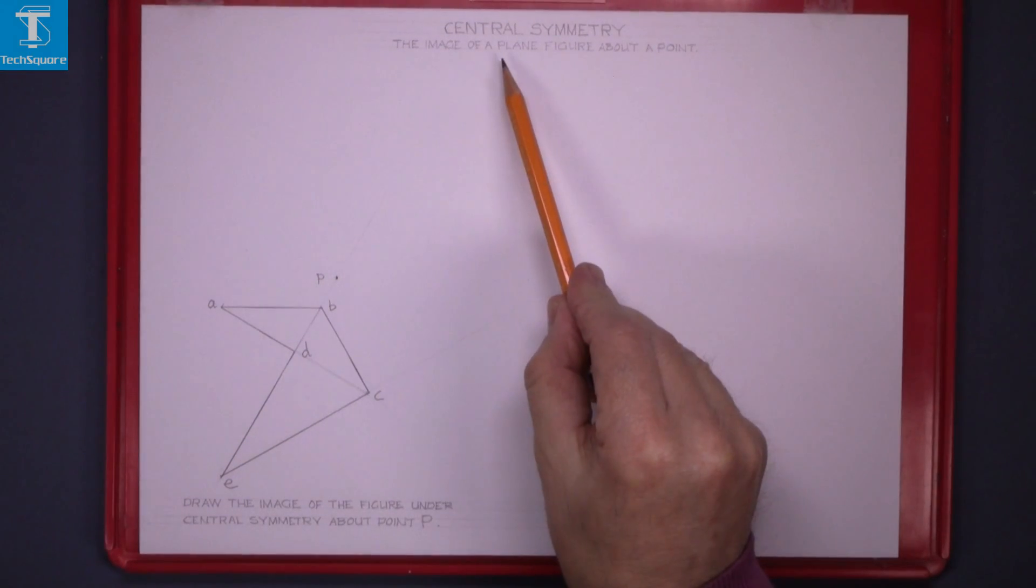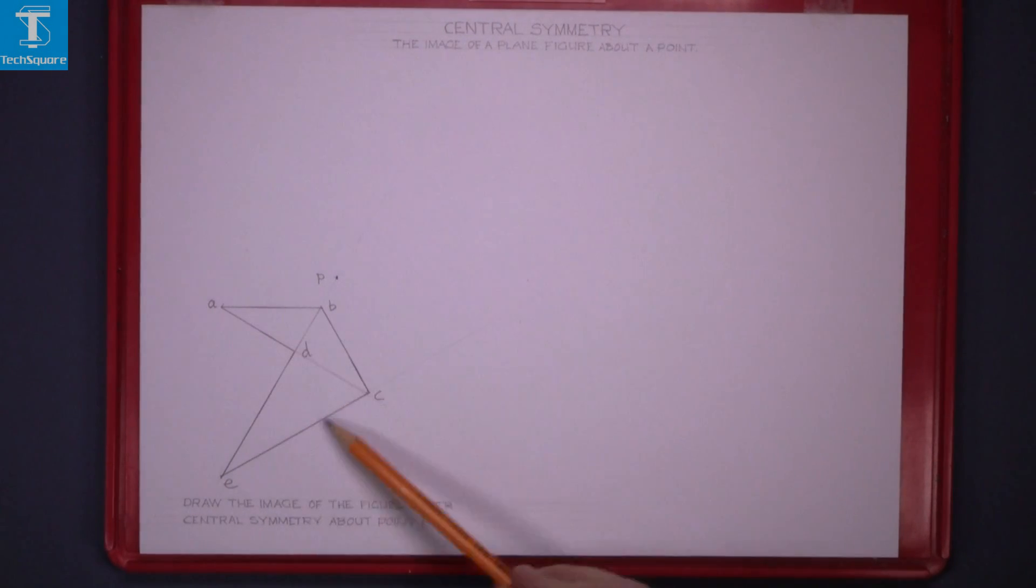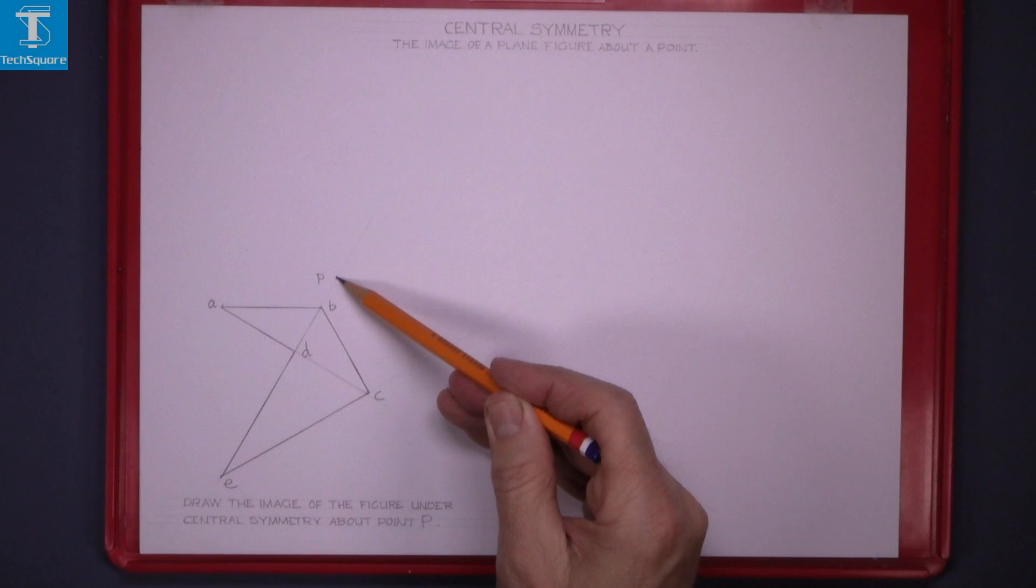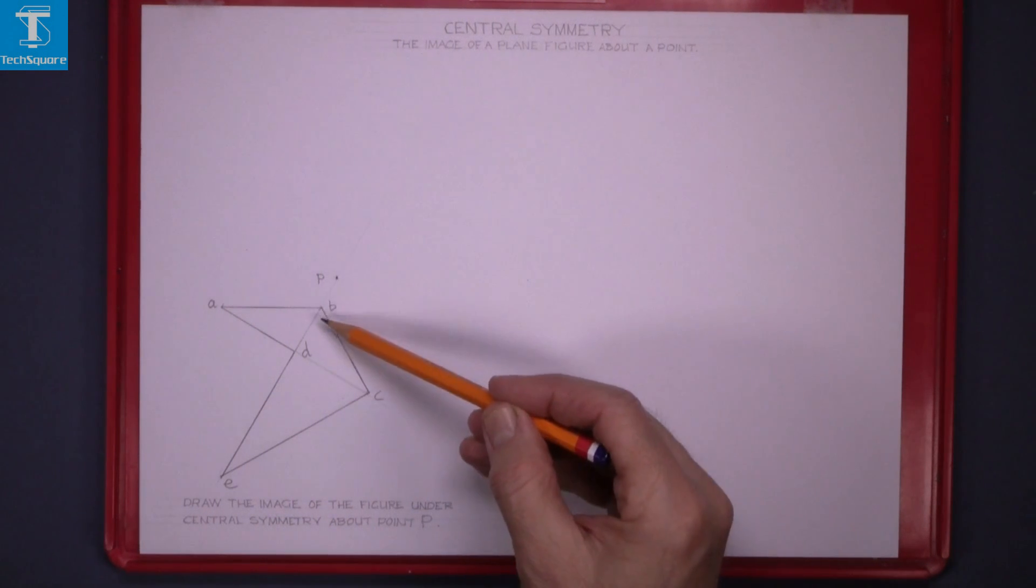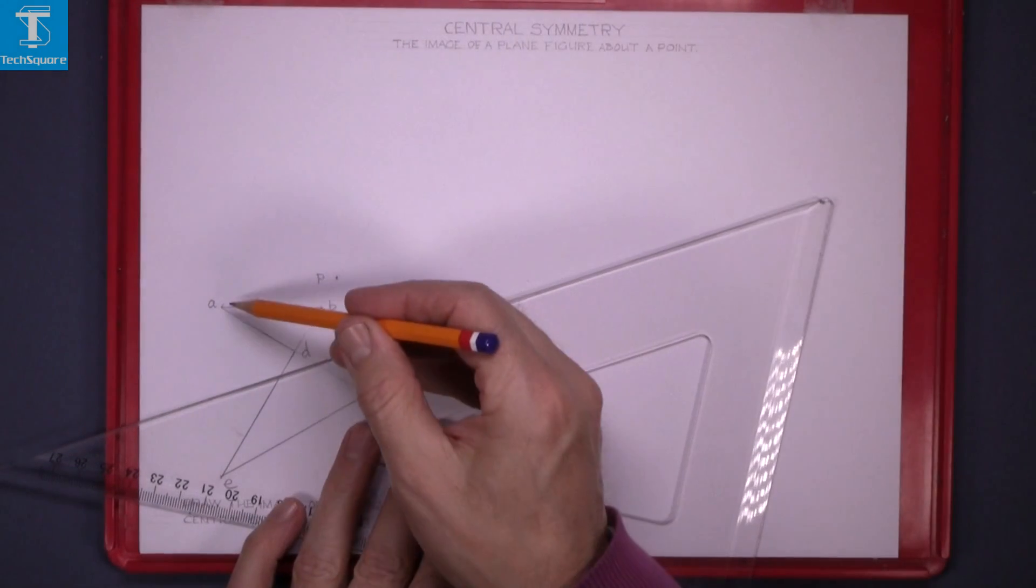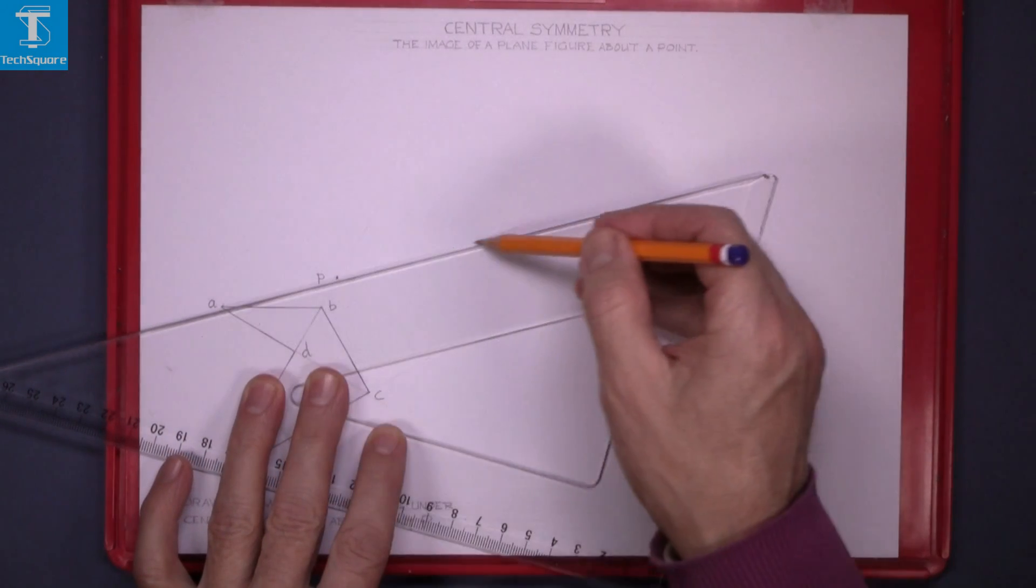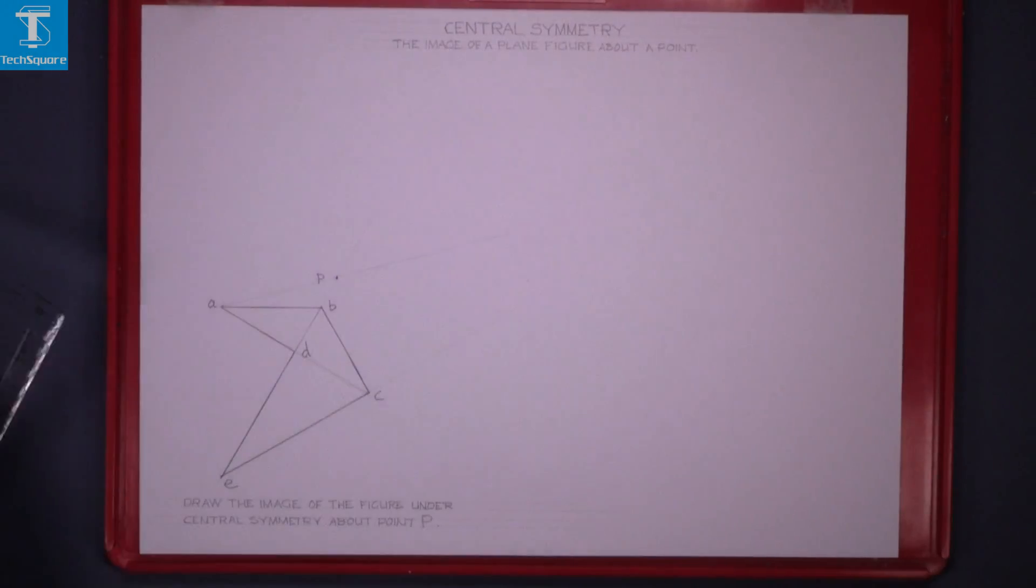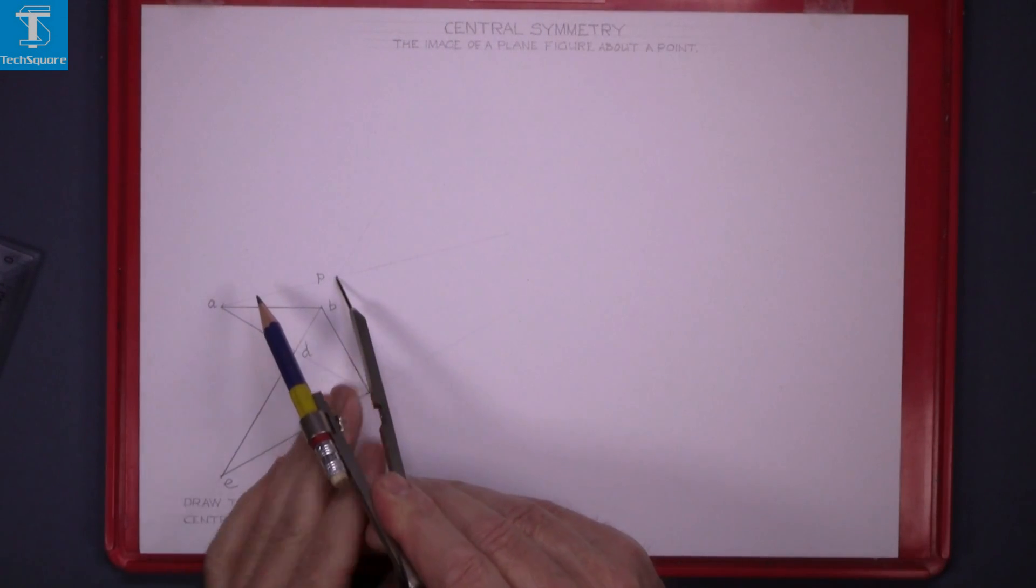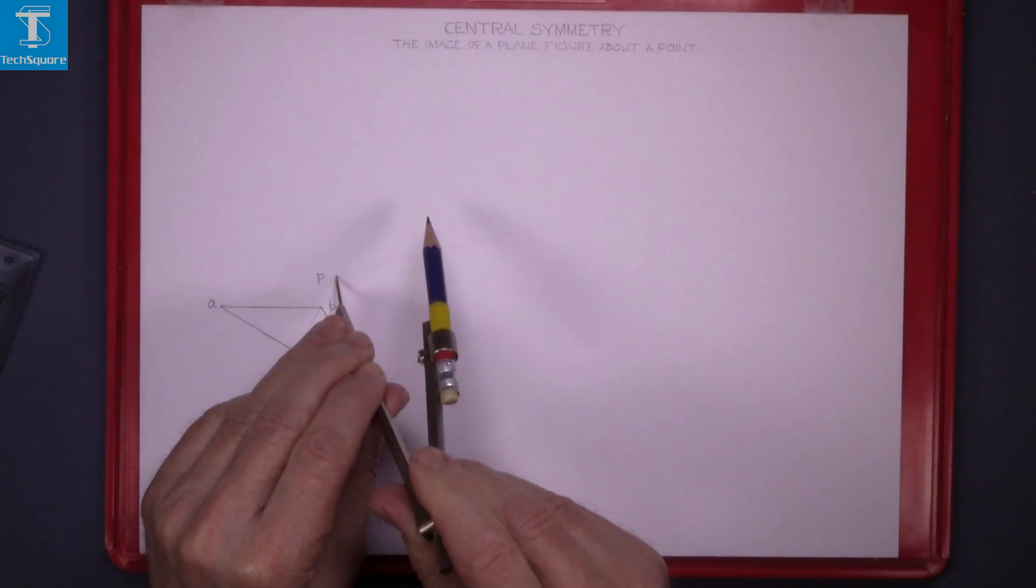Central symmetry: the image of a plane figure about a point. Here we have a plane figure. Draw the image of the figure under central symmetry about point P. This point P is going to be the center of symmetry. Join from A through P, set the compass from P to A, and mark it on the